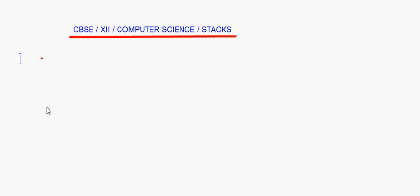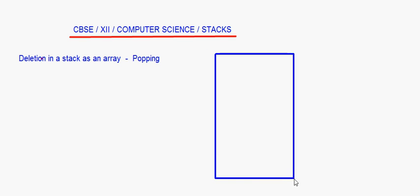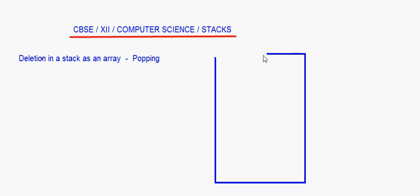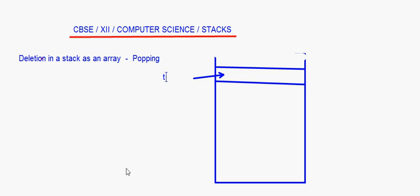Let's take up stacks. The topic we'll do today is deletion in a stack as an array. This operation is called popping from a stack. Deletion from a stack, or popping from a stack, happens from the top. So if this is the top of the stack, this is going to be the first item that will be deleted. The topmost item will get deleted.